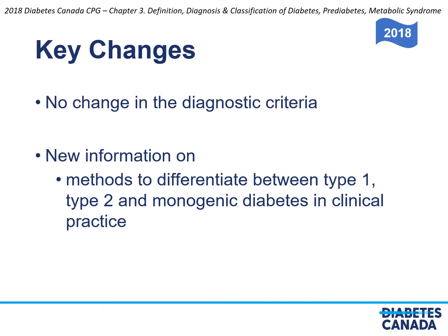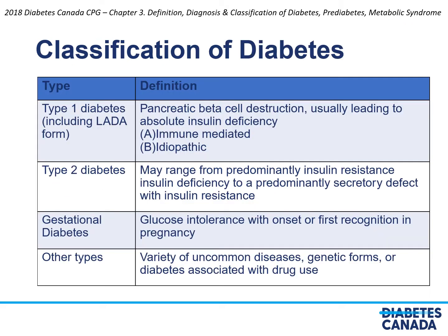There are no changes to the recommendations in this chapter. In particular, there are no changes to the diagnostic criteria for diabetes, pre-diabetes or metabolic syndrome. However, the text does include new information to differentiate between type 1, type 2 and monogenic diabetes in clinical practice.